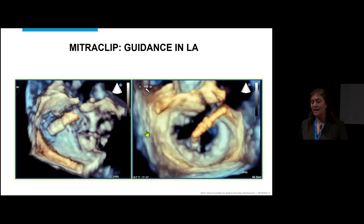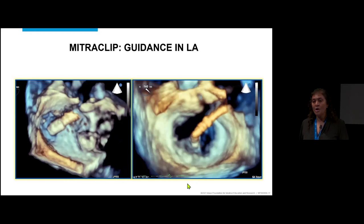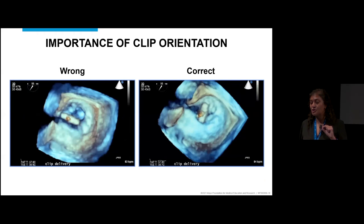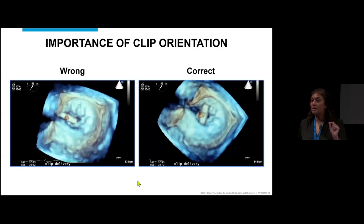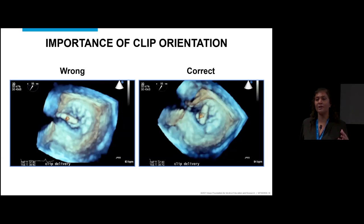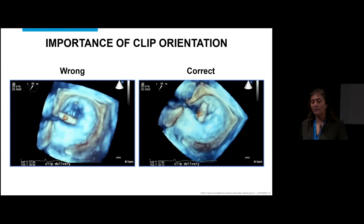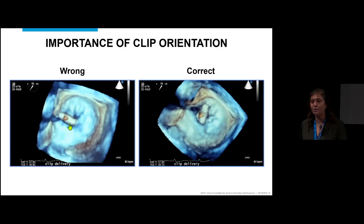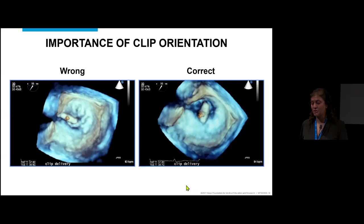We watch the clip coming down towards the valve and then through the valve. Positioning the clip with the right orientation is done entirely with 3D — this can really be missed on fluoroscopy alone. The heart is a three-dimensional structure, and big hearts especially may not reveal exact clip positioning on fluoroscopy. On 3D, we can tell if the positioning won't grab the A2P2 scallops and guide the operator to turn it to the appropriate position.